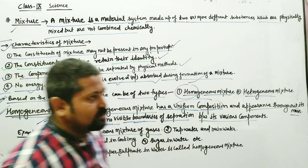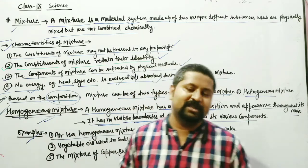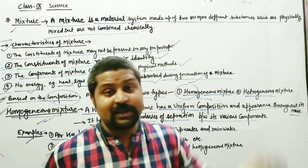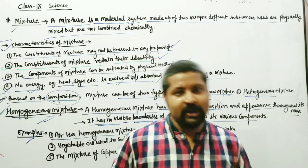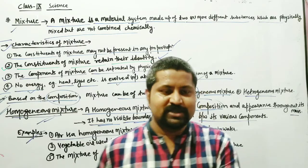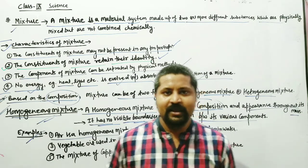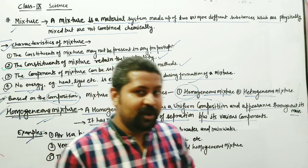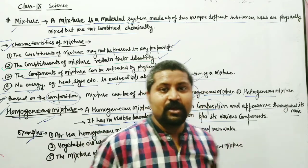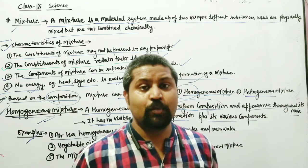Other examples of homogeneous mixtures: tap water and rain water are homogeneous mixtures. Sugar in water is also a homogeneous mixture — when you mix sugar in water, the sugar is completely dissolved. If you take soil and dissolve it in water, it will not mix uniformly; after some time the soil will settle down and separate, so that is not homogeneous.